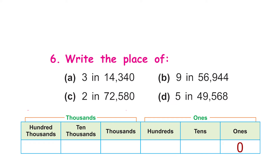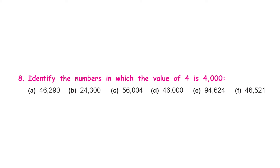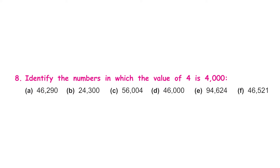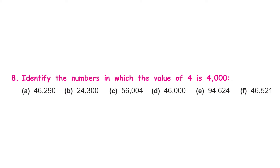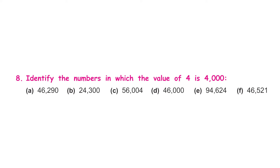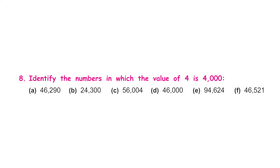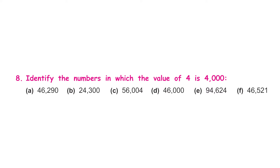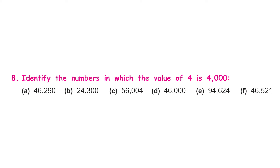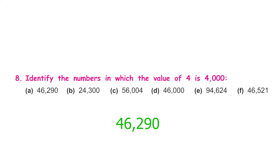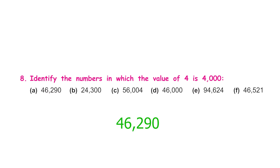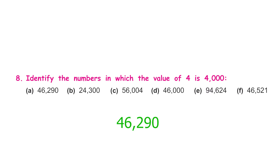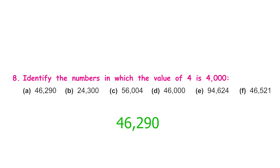So the value of 2 here is two thousand. Question 8: identify the numbers in which the value of four is four thousand. Starting from the right, the fourth column is the thousands column. In part a, 4 is placed in the fifth column, not the fourth — so the value of four is not equal to four thousand.